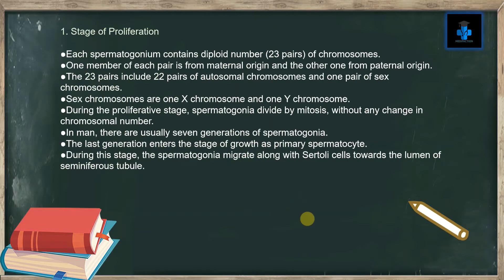Stage one: stage of proliferation. Each spermatogonium contains the diploid number, that is 23 pairs of chromosomes. One member of each pair is from maternal origin and the other one from paternal origin. The 23 pairs include 22 pairs of autosomal chromosomes and one pair of sex chromosomes.